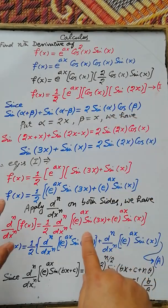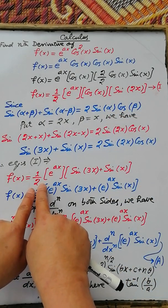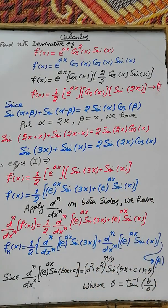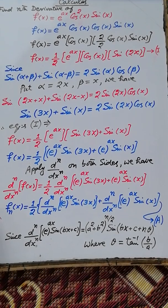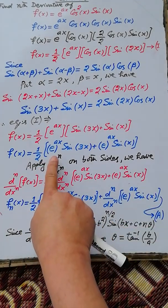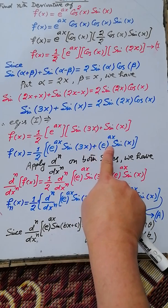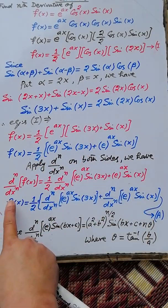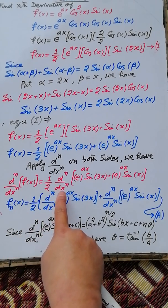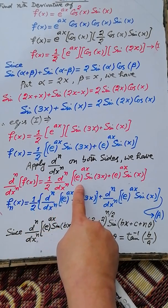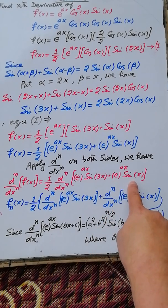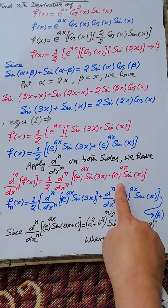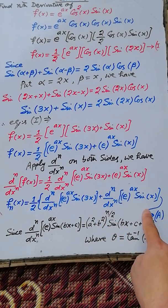Therefore, equation 1 gives f(x) = one-half times e raise power ax times [sin(3x) + sin(x)], which is also equal to one-half times [e raise power ax sin(3x) + e raise power ax sin(x)]. Applying the nth derivative on both sides, we have the nth derivative of f(x) = one-half times [nth derivative of e raise power ax sin(3x) + nth derivative of e raise power ax sin(x)], which is a sum of functions.